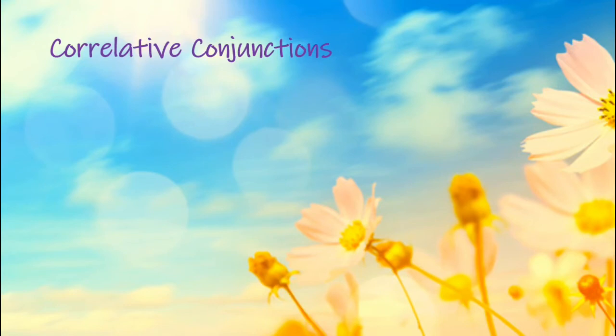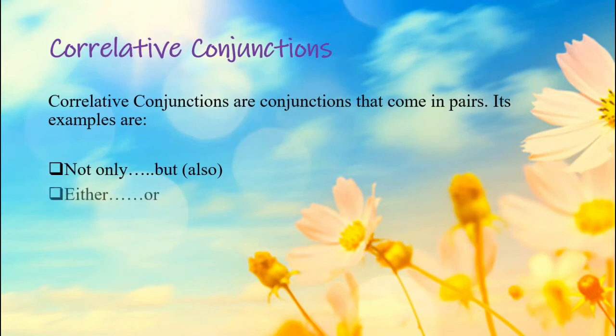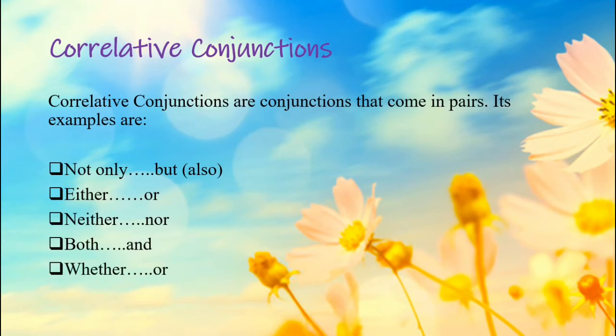Let's now read about the correlative conjunctions. Correlative conjunctions are conjunctions that come in pairs. Let's see a few examples: NOT ONLY... BUT ALSO, EITHER... OR, NEITHER... NOR, BOTH... AND, WHETHER... OR.